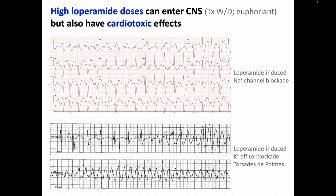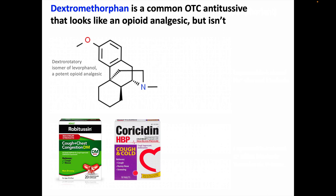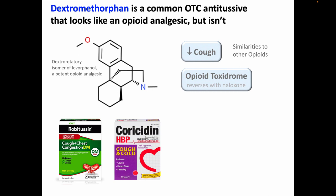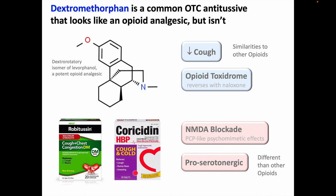Dextromethorphan is a common over-the-counter antitussive that has a chemical structure that looks like an opioid analgesic, but it doesn't have analgesic effects. Dextromethorphan shares some properties with other opioids, such as cough suppression and the potential in overdose to produce an opioid toxidrome that can even be reversed with naloxone. But it has differences from typical opioids also, such as NMDA receptor blockade, which can induce some PCP-like psychomimetic effects, and it's proserotonergic and can be involved in serotonin syndrome. Dextromethorphan's psychomimetic effects, and the fact that it's available over-the-counter, contribute to its popularity for recreational misuse. Robitussin DM has dextromethorphan, and if you drink enough, you can go robo-tripping.